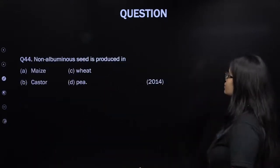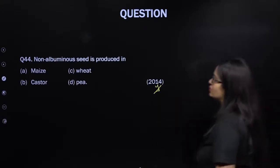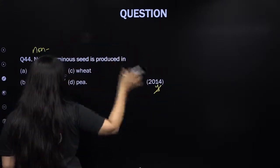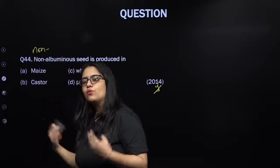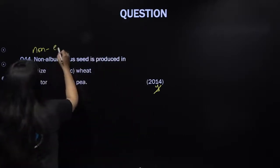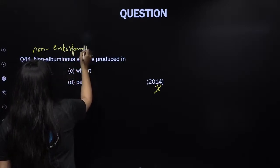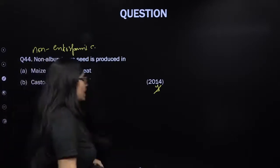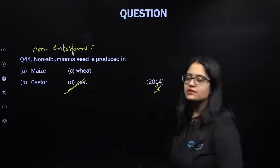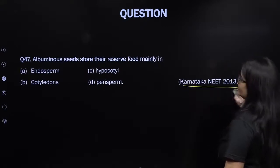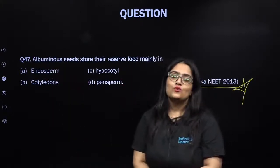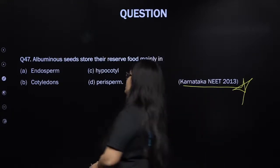From NEET 2014: non-albuminous seeds are non-endospermic seeds — seeds which on maturity do not possess endosperm because it was completely absorbed during embryo development. Maize, castor, and wheat are all endospermic (albuminous) seeds. Pea is a non-endospermic (non-albuminous) seed. Albuminous or endospermic seeds store their reserved food in the form of endosperm.